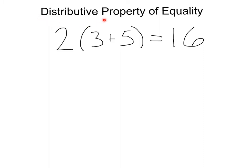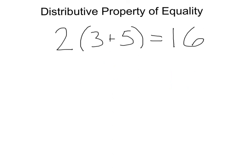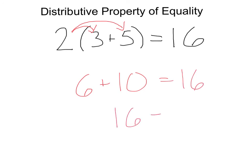Last but not least, we have the distributive property of equality. We have two times parentheses three plus five, equal to sixteen. If we simplify without distributing, we do the parentheses first, which gives us eight, and we'd still have this times two equal to sixteen, which is true. Now think back to what distribution means — when we distribute this two, when we have something multiplied by a parentheses, we can multiply the outside number to each of the inside numbers. So this gives us two times three, which equals six, plus two times five, which equals ten. And if we simplified that, we'd get sixteen equals sixteen, which is also true. So whenever we have an equal sign, we are allowed to distribute either side and maintain our equality.